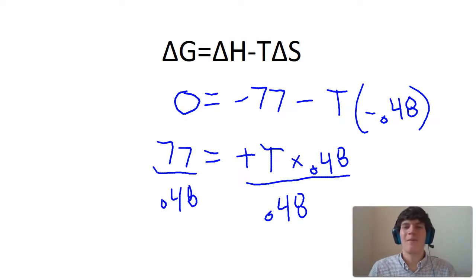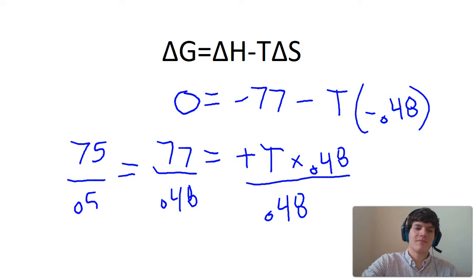Now, I don't know about you, but dividing 77 by 0.48 is a very difficult thing to do in my head. So I'm going to make the numbers easier to work with. What if we change the numbers from 77 to 75 and 0.48 to 0.5? Dividing by 0.5 is the same thing as multiplying by 2. Therefore, t is going to be equal to 150 Kelvin.